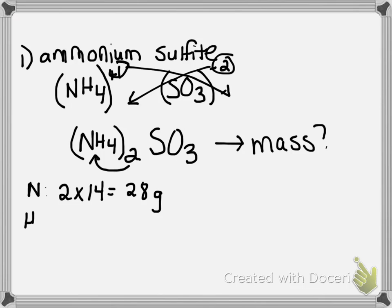Our mass of H is going to be the same thing. We have this two here, so we're going to distribute the two inside the parentheses. Four times two is eight, so we have a grand total of eight hydrogen atoms, each with a mass of one. So our mass of hydrogen is going to be 8 grams.